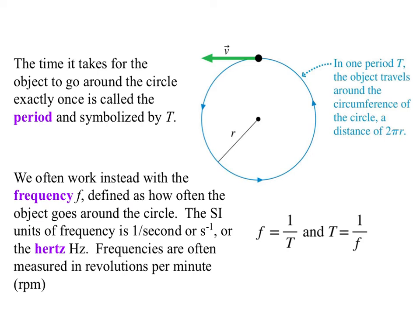The time it takes for the object to go around the circle exactly once is called the period, and we symbolize it with capital T. We often work instead with the frequency. In physics, we often go between these two. The frequency is defined as how often the object goes around the circle, or at what rate.